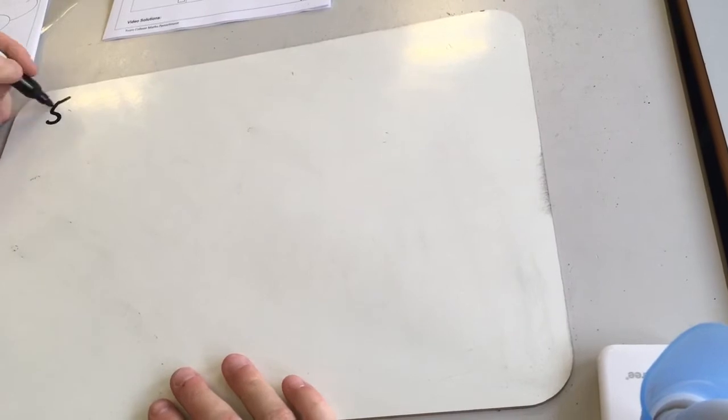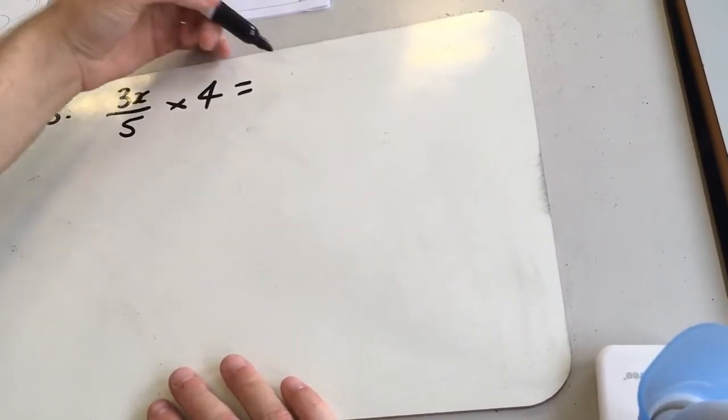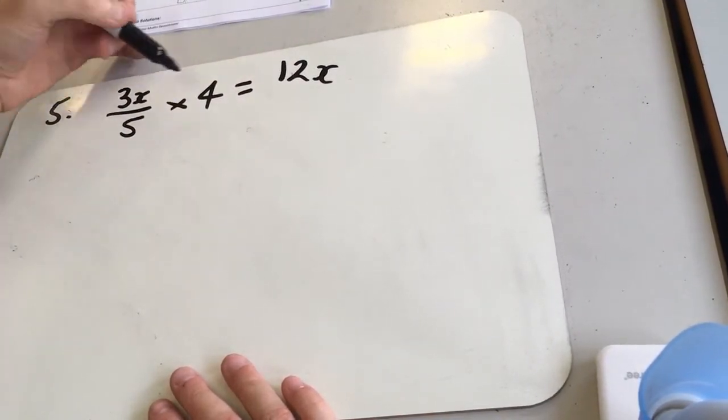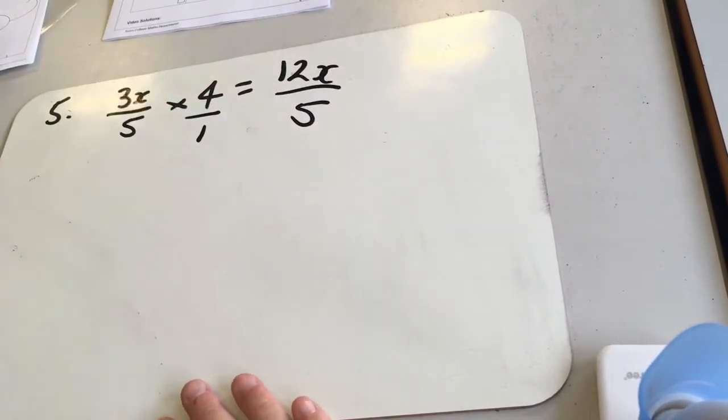Okay, next one, question 5. So 3x over 5 times 4 gives us 12x. We're timesing the tops, and you can imagine this is 4 over 1. So 5 times 1 over 5, so 12 over 5x.